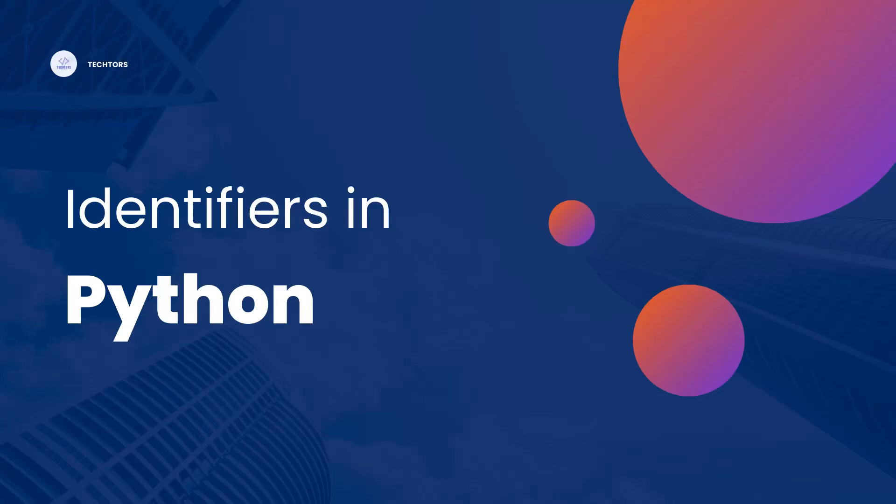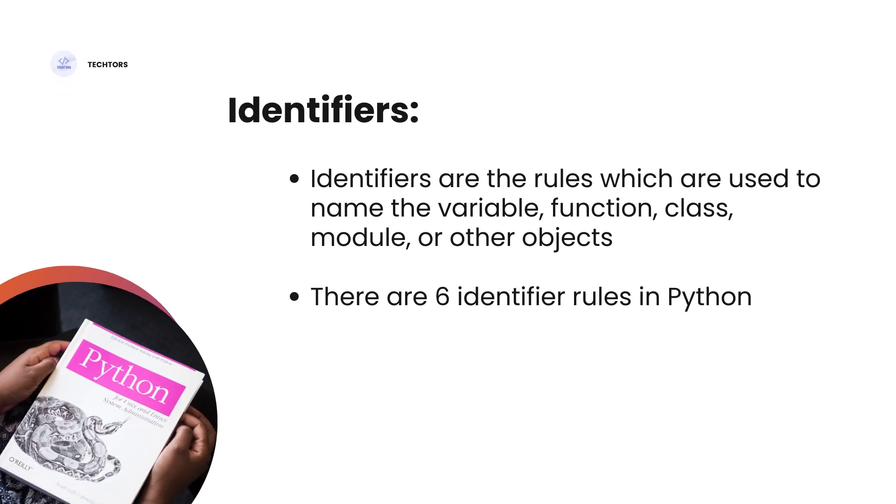In this video, I am going to explain identifiers in Python. Identifiers are the rules which are used to name the variable, function, class, module, or other objects.